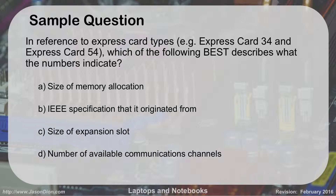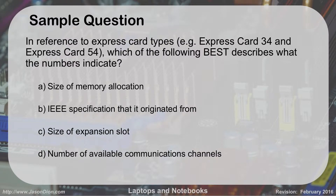Example question: In reference to Express Card types — Express Card 34 and Express Card 54 — which of the following best describes what the numbers indicate? Is it the size of the memory allocation, the IEEE specification, the size of the expansion slot, or the number of available communication channels? The answer is C — the size of the expansion slot in millimeters.